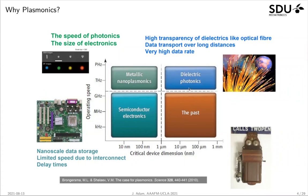On the other hand, if you keep the speed rather low and reduce the critical device dimensions, then this is covered in the semiconductor electronics region. And if you want very high speeds combined with very low critical device dimensions, then this region is covered by metallic nanoplasmonics. And that's why we are very interested in still developing further future materials in this area.